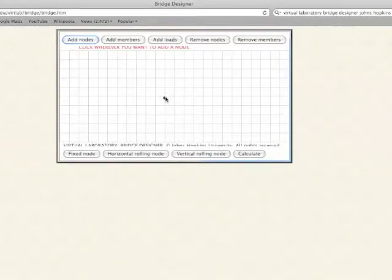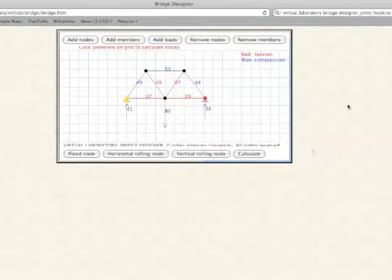The Virtual Laboratory bridge designer at Johns Hopkins University predicts those forces. The bridge is drawn using nodes, members, loads, a fixed node, and a horizontal rolling node. Then, the software calculates the tension and compression forces in each member.